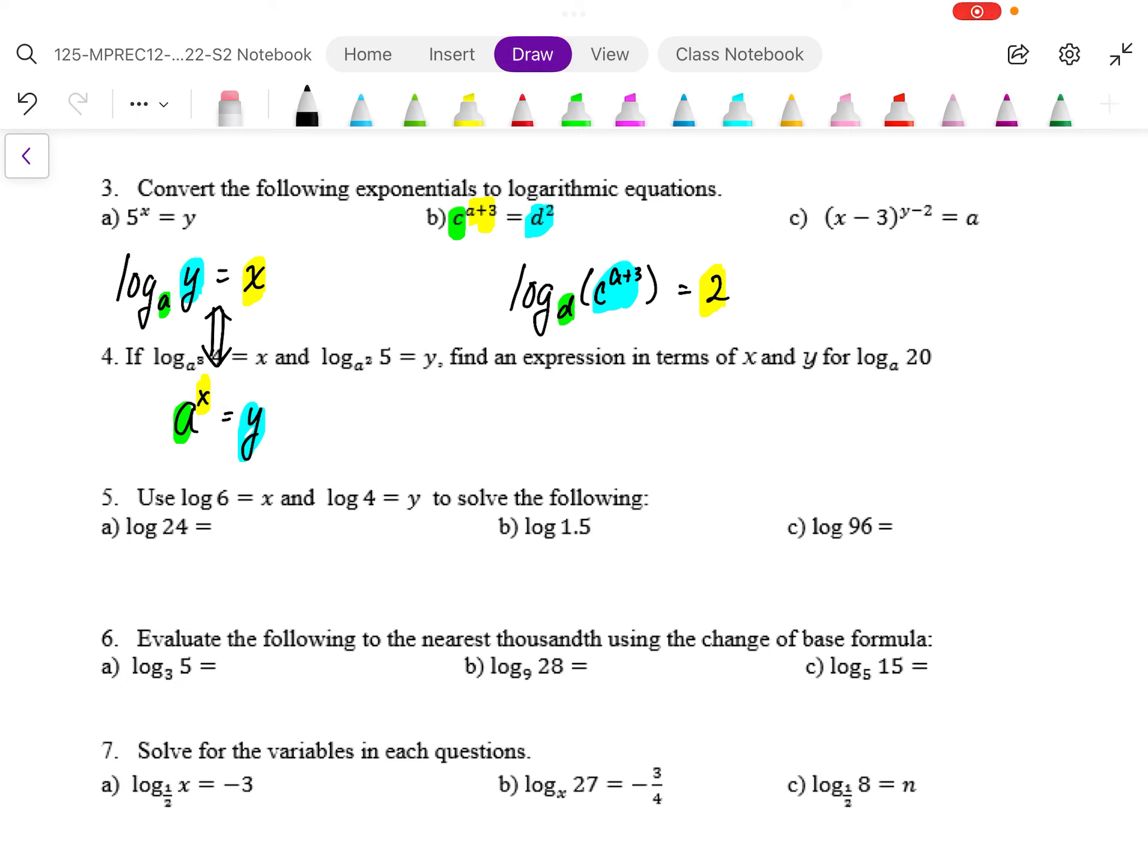And I can rewrite my log like this: log base c of d squared equals a plus 3. And there's my base shows up here, my exponent shows up here, and my argument shows up here.